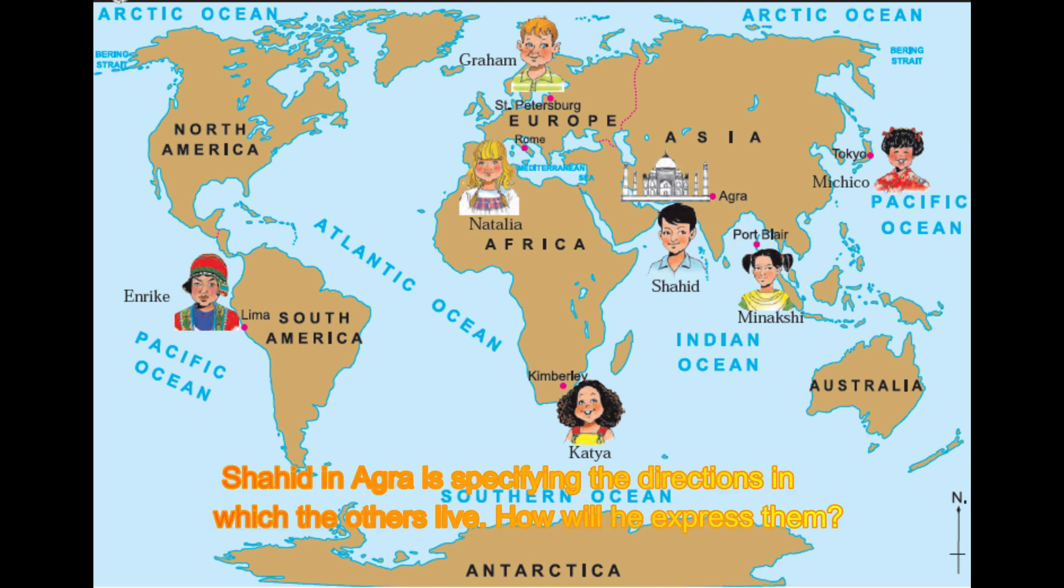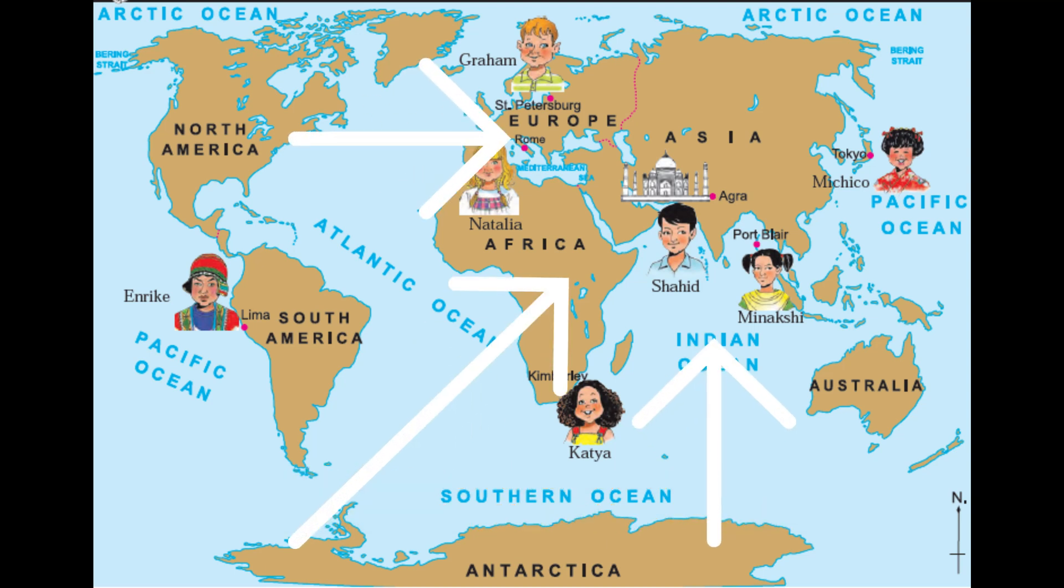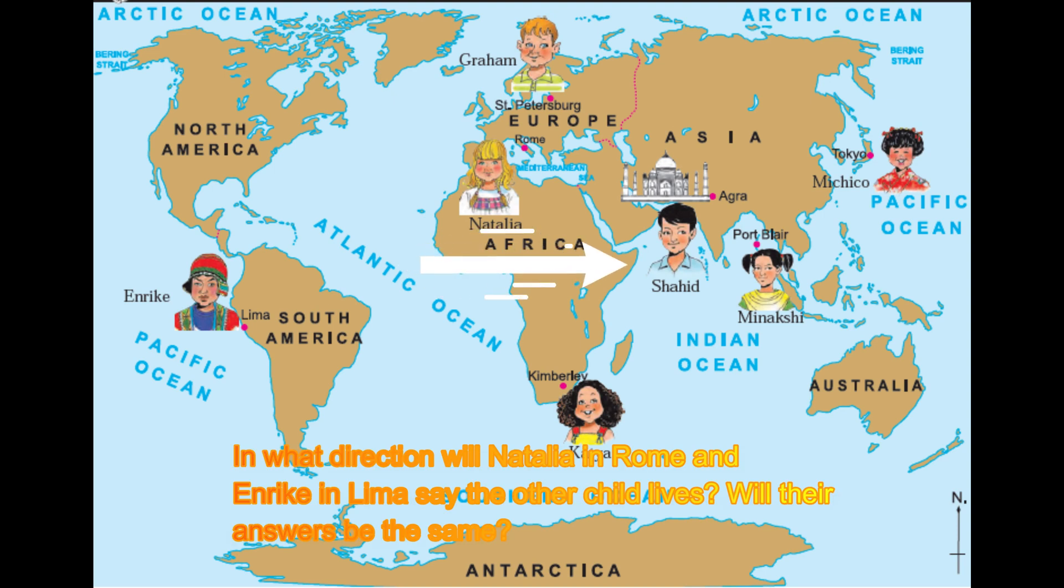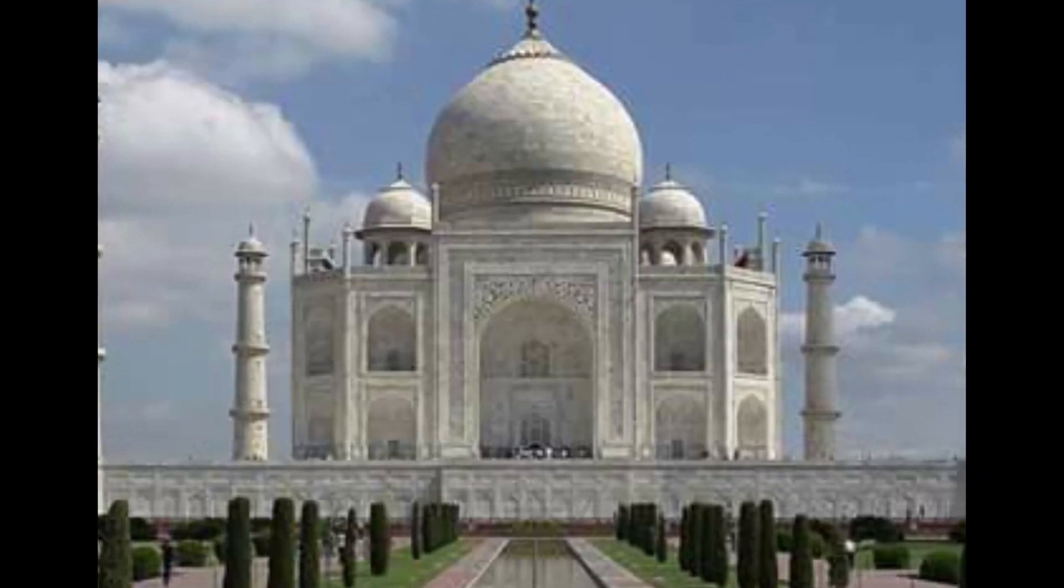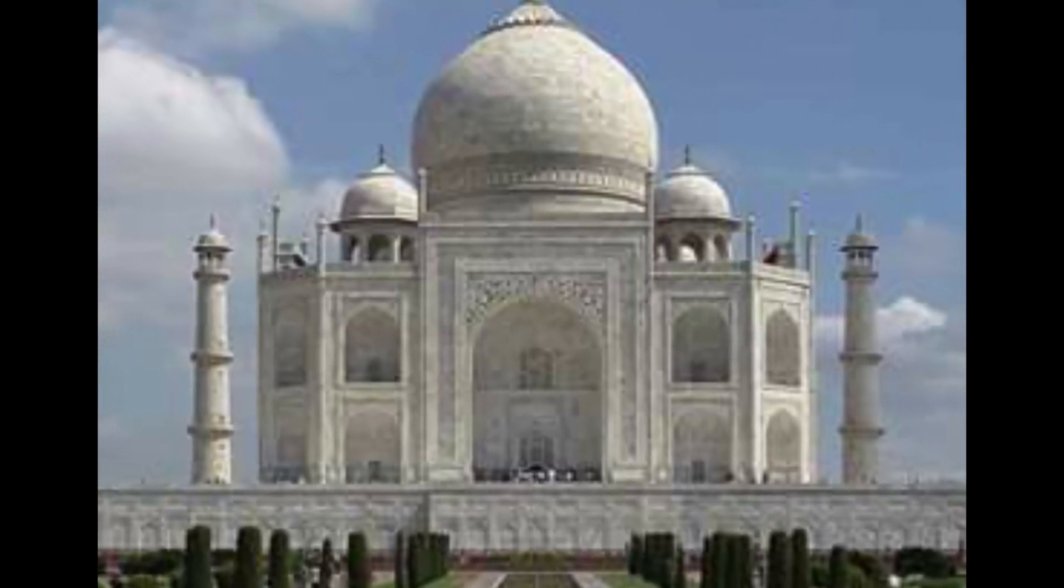For others, Shahid can say that he lives in the northeast hemisphere of the earth. Natalia in Rome and Enrica in Lima can say that the others live in the east direction. Each of these children located the Taj Mahal in a different way, according to their location. So their answers are different.